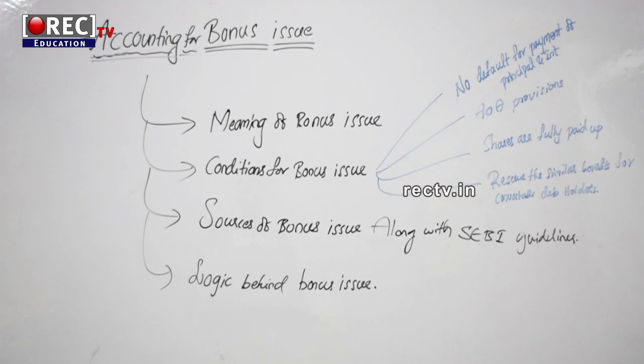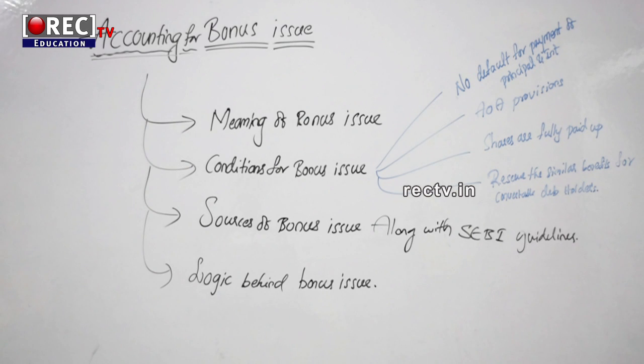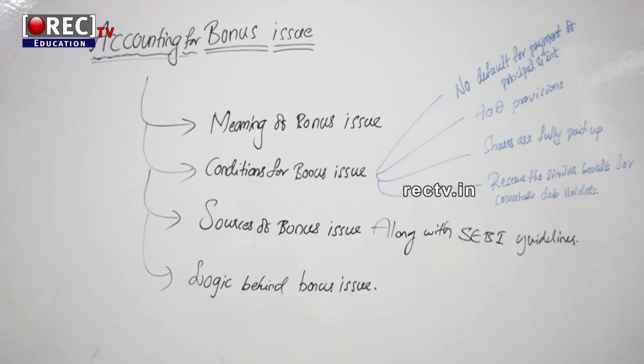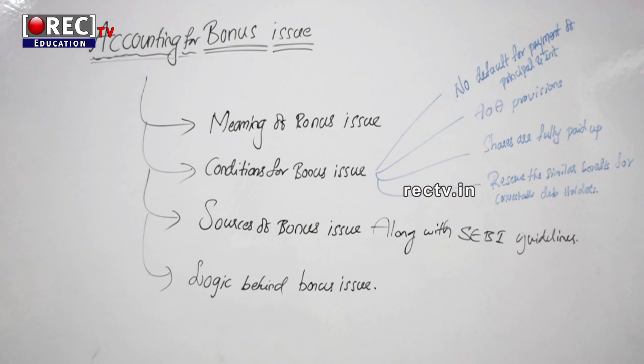Next, your AOA provision should authorize the issue of bonus shares. And the third condition is that shares are fully paid up.